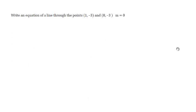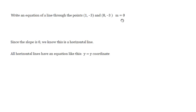Write an equation of a line through the points (1, negative 3) and (8, negative 3). Earlier, we found the slope of this line to be 0 using the slope formula. Since the slope is 0, we know this is a horizontal line. All horizontal lines have an equation of the form y equals the y-coordinate. The y-coordinate is negative 3 in both points, so the equation of this line is y equals negative 3.